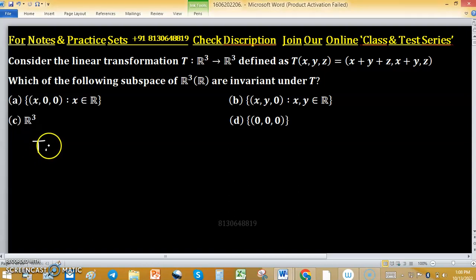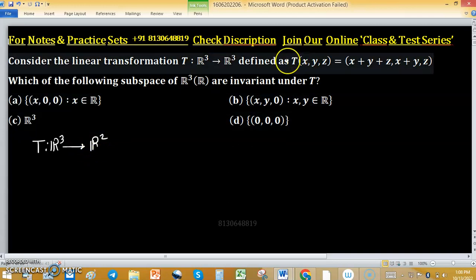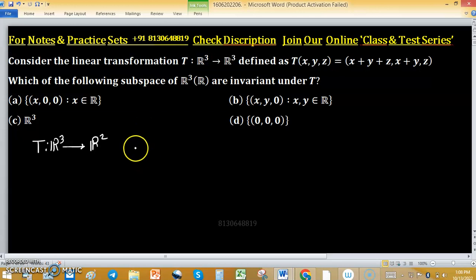Consider the linear transformation T defined from R cube to R cube as you can see on my screen. Which of the following subspace of R cube over R are invariant under T? A subspace W is said to be T invariant if T of W is a subspace of W.